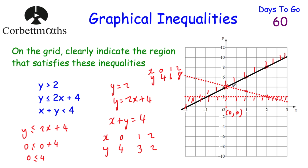So far our region is above the horizontal line y = 2 and below the diagonal line y = 2x + 4. For x + y < 4, choosing the origin again: 0 + 0 < 4 — yes. The origin is on the side we want to keep, so we reject above that diagonal line. That means this is the region we're looking for — I'm putting an R in there. You can shade it or label it depending on the wording of the question.